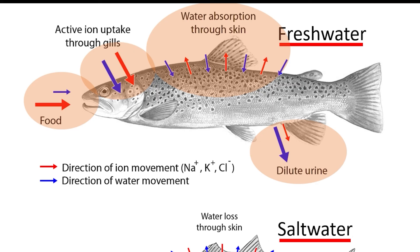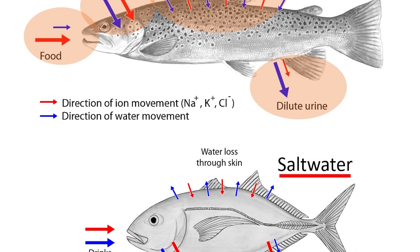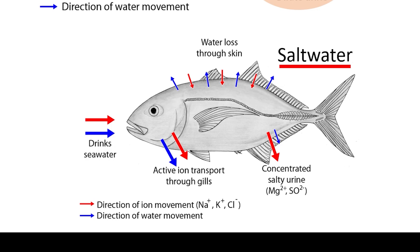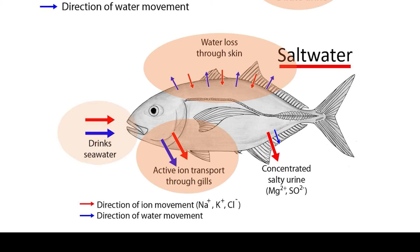The saltwater fish lives in a hypertonic environment, meaning the solution outside of the fish contains more dissolved solutes than within the fish's cells. This means that the fish is constantly losing water via osmosis through the skin and gills to the outside environment. To compensate for this water loss, a saltwater fish must not only drink water, but it must also have a much more efficient kidney to create highly concentrated urine to conserve water.